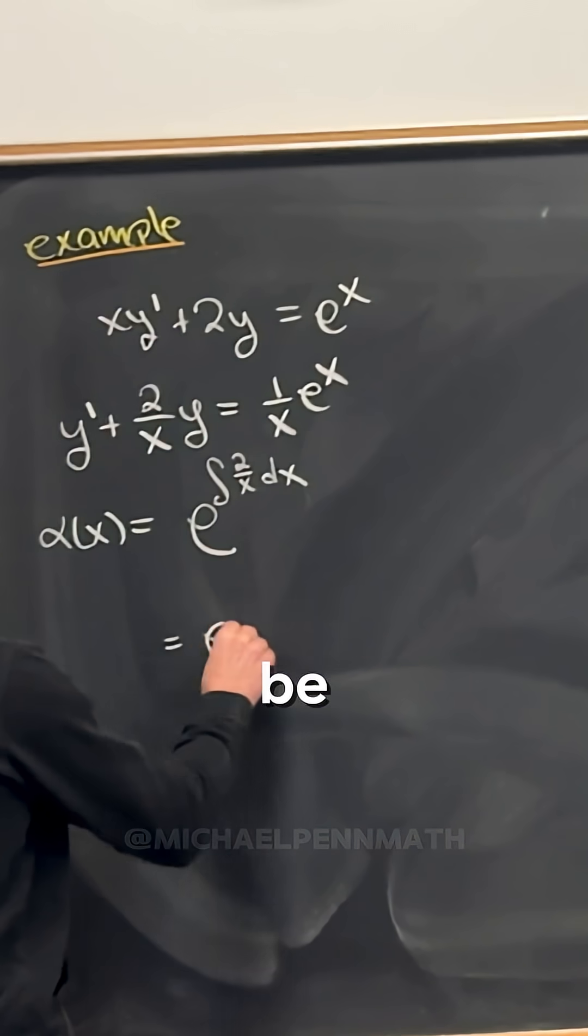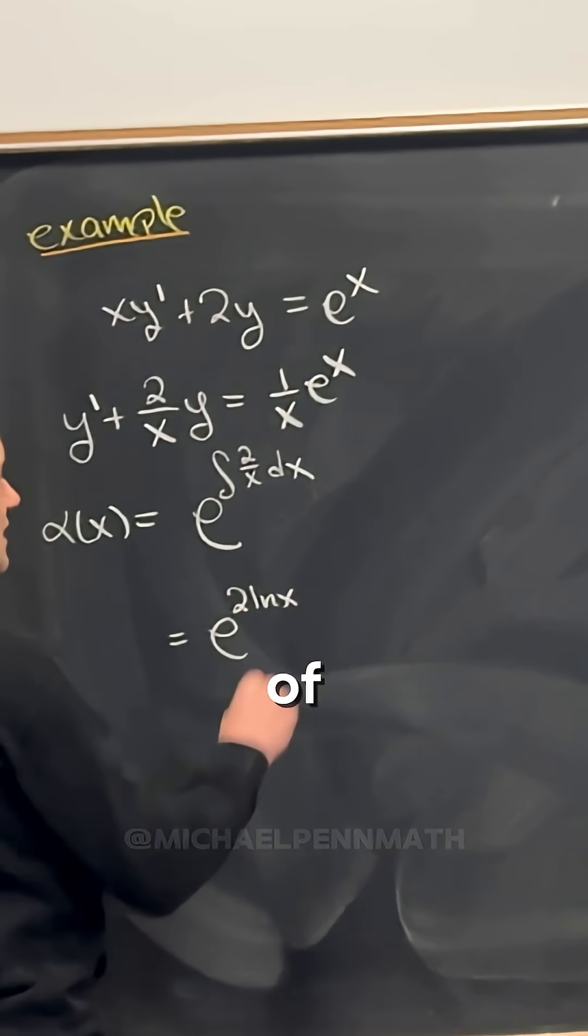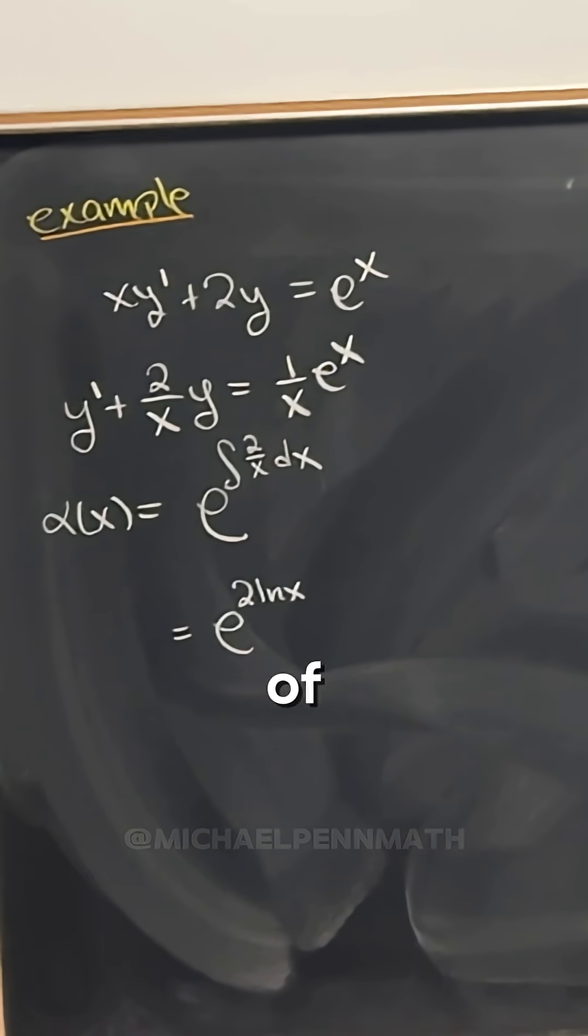And so observe that that's going to be e to the 2 times natural log of x, because the antiderivative of 1 over x is natural log of x.